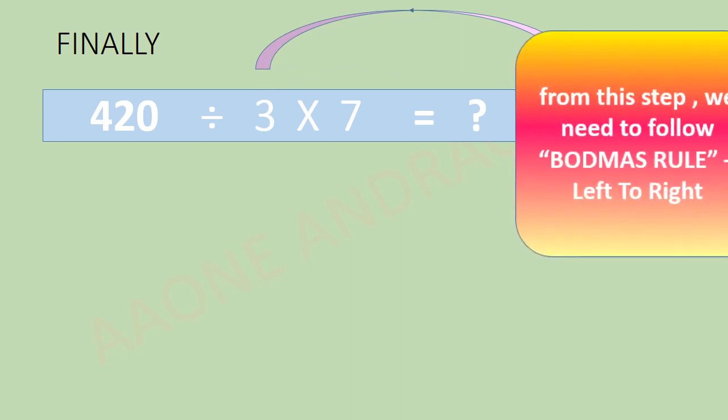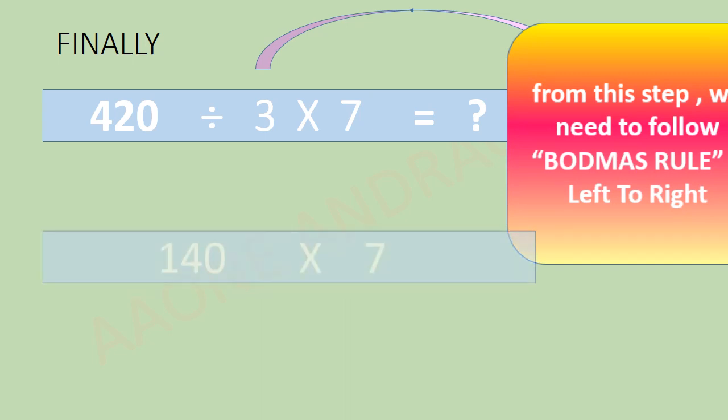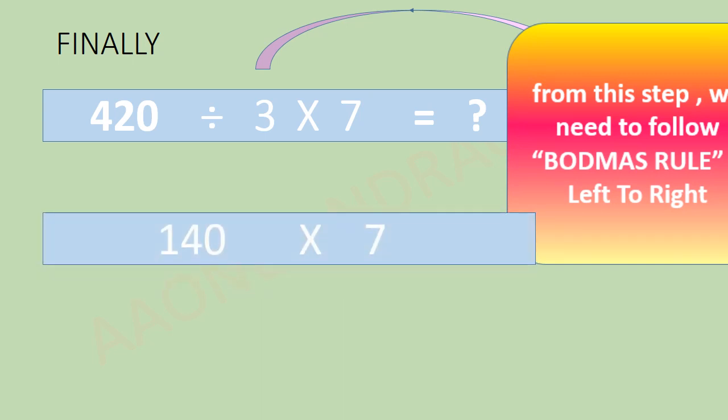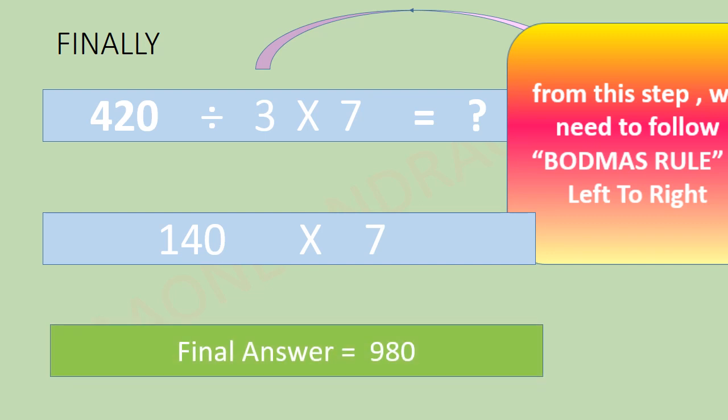So division first, multiplication next. Here also, 420 divided by 3 is 140, into 7 that is 980. Finally, my answer is 980.